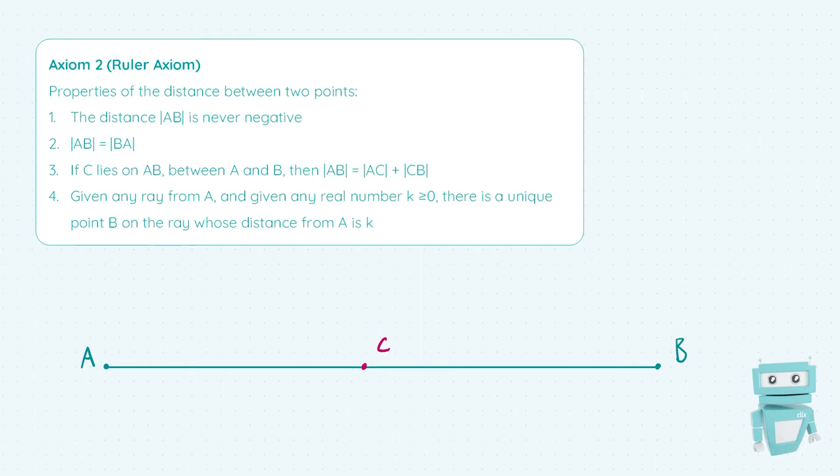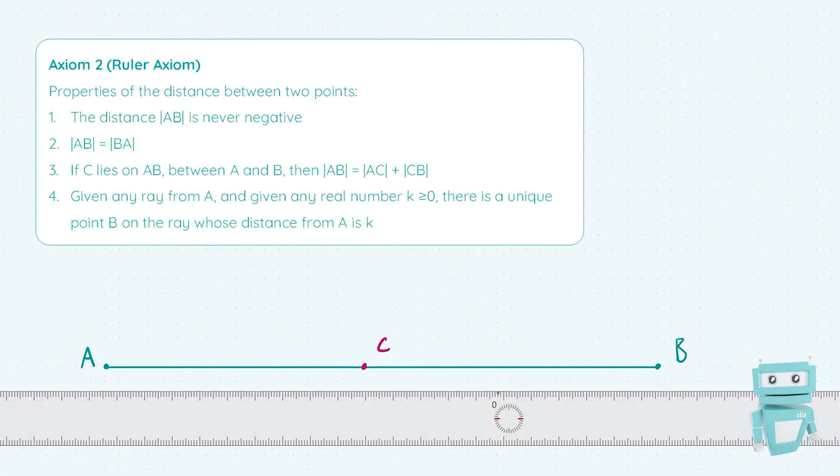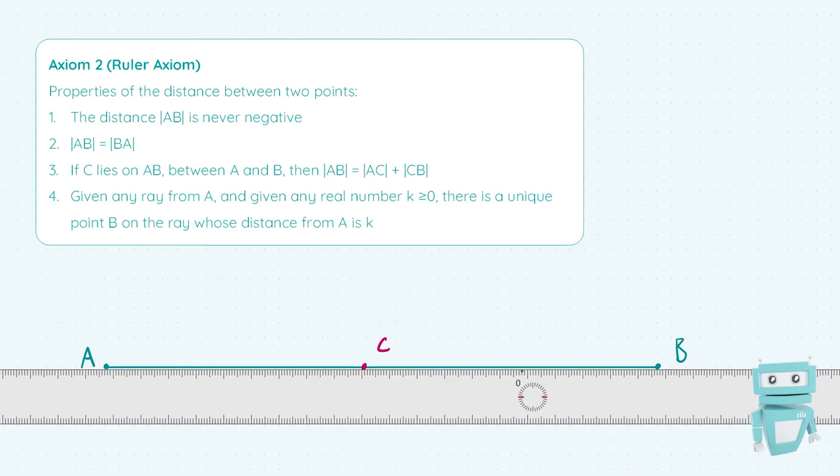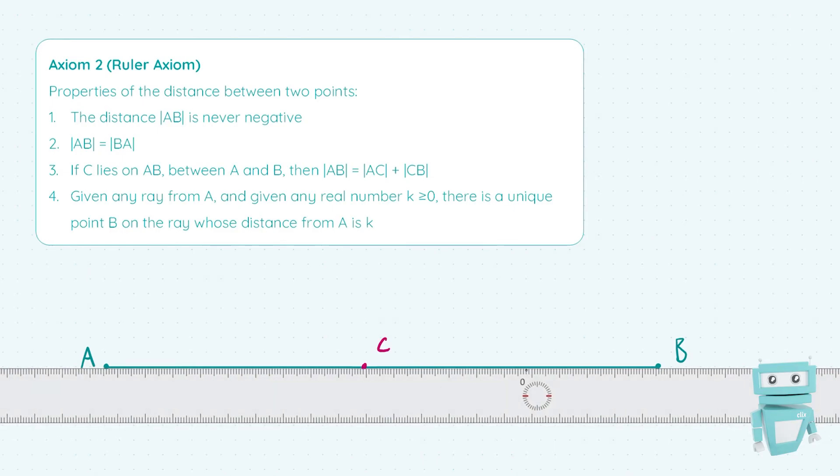But just to show you an example here with lengths, we can take out our ruler. If we have a point C on AB like we do here, we can say that AC, which is this length, plus CB, which is this length, pretty much adds up to AB, which is the total length from A to B. So it makes sense when you see it visually.